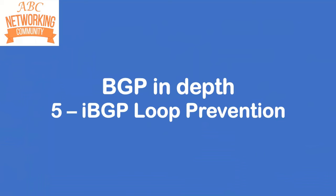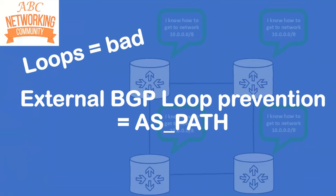Hi guys, this is Joe Neville and I'm back with another BGP in-depth video. In this one we're going to be looking at IBGP loop prevention. In my last video I was explaining why loops are bad when it comes to IP routing, and that was focusing on how external BGP uses AS path to prevent loops.